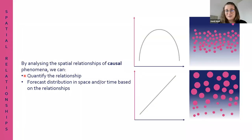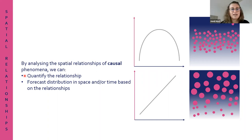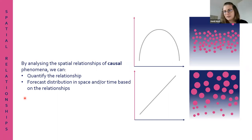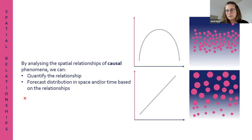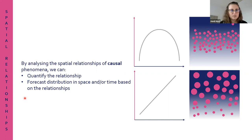By combining the spatial distribution of different factors, we can try to identify, think about, and quantify relationships between different factors - and try to understand what drives different ecological phenomena, for example, amount of vegetation or distribution of soil microorganisms.